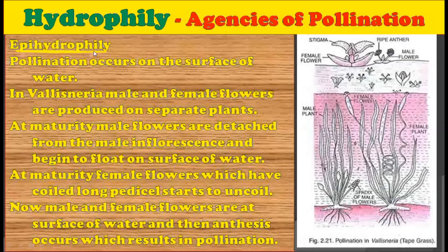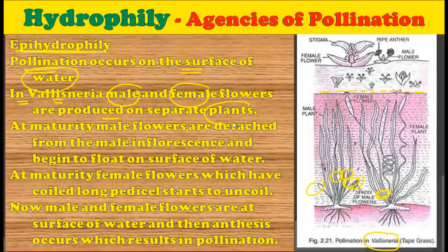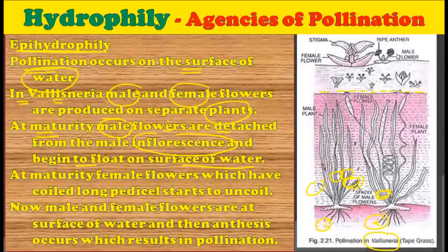The next type is epihydrophily — pollination occurs on the surface of water, as seen in the example of Valisneria. The pollination occurs at the surface of water, not below. The female flowers in Valisneria are submerged under the water, but still the pollination occurs at the surface. In Valisneria, male and female flowers are produced on separate plants — one plant possesses the female flower while the other possesses the male flower. At maturity, the male flowers detach from the male inflorescence and begin to float on the surface of water.